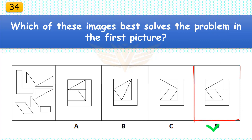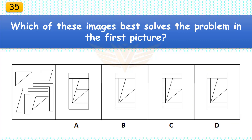Which of these images best solves the problem in the first picture? The correct answer is D. There are seven pieces in the assembled puzzle.